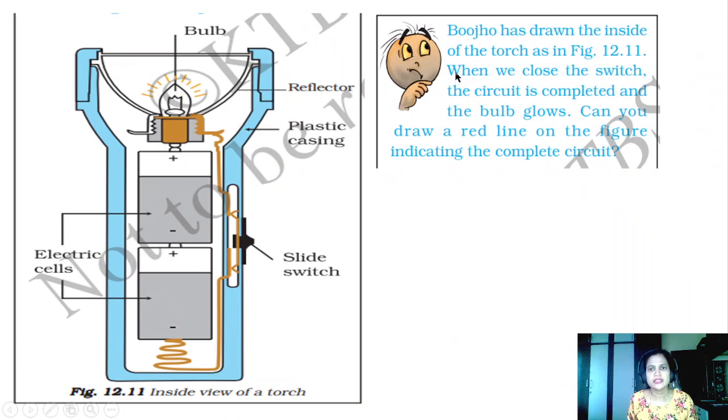See here. Boojho has drawn the inside of the torch as in figure 12.11. When we close the switch, the circuit is completed and the bulb will glow. Can you draw the red line on the figure indicating the complete circuit? This is the inside. When you cut in a section, vertical section of the bulb, you see like this.